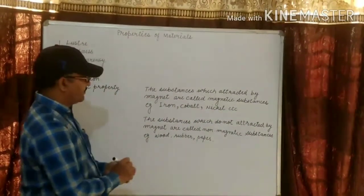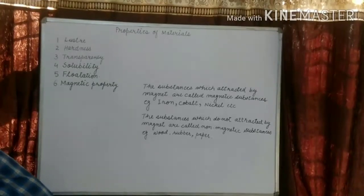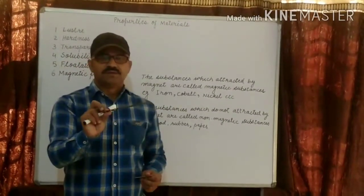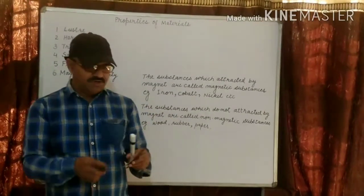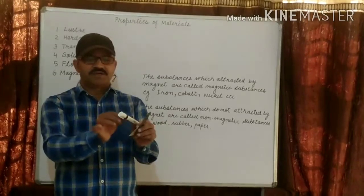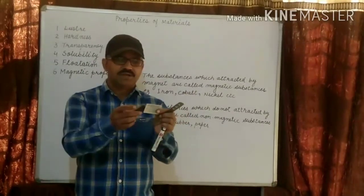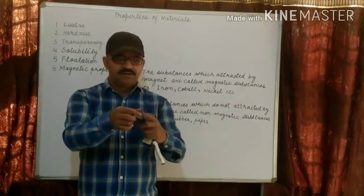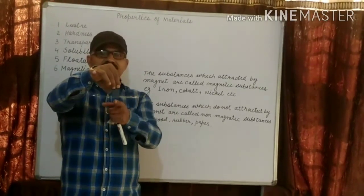For this we perform one small activity. I am taking this marker, this iron strip, and this piece of paper. We will check which one is the magnetic substance and which one is the non-magnetic substance. The marker is not attracted by the magnet — it is a non-magnetic substance. The piece of paper is also not attracted. Now we will see this iron piece — it is attracted by the magnet, so this is the magnetic substance.